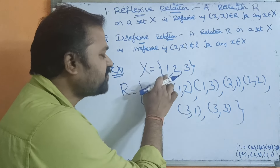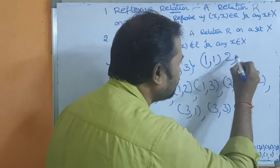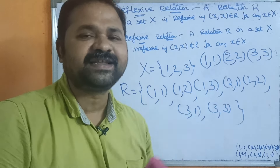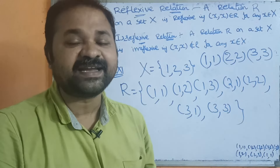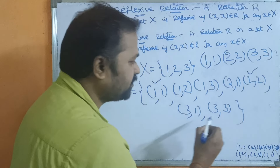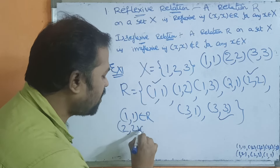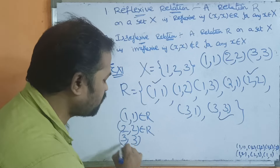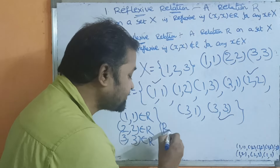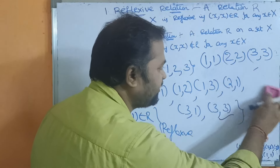Now we check whether this relation is reflexive. The elements of the set are 1, 2, 3, so we need ordered pairs (1,1), (2,2), and (3,3) present in the relation. Observing the relation: (1,1) is present, (2,2) is present, and (3,3) is present. Since all three pairs belong to R, we can say it is a reflexive relation.